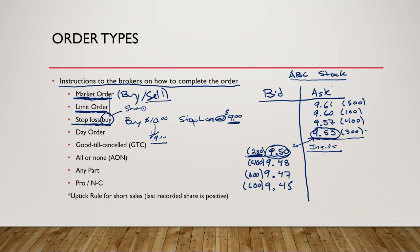The opposite is a stop buy order, typically used with short sales. When you're short, losses accumulate as the share price rises. Using the same example — you shorted ABC at $10 and put a stop buy order at $11. If the share price rises to $11, it initiates a market order to buy back the shares, capping your losses. Again, it's a market order, so you won't necessarily get filled at exactly $11 — you'll get filled at the next best available price.